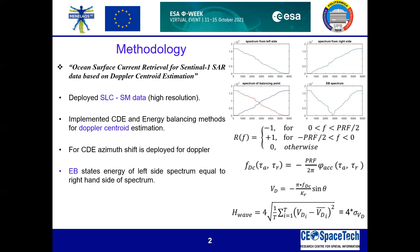Based on this Doppler history, we can retrieve ocean surface velocity by the equation Vd given here. For that, we need an incident angle and the wave number, which can be retrieved from metadata. Based on this Doppler velocity with the empirical relationship, we can also measure the wave height.